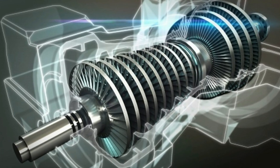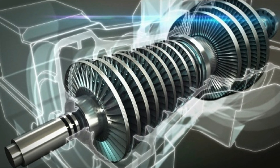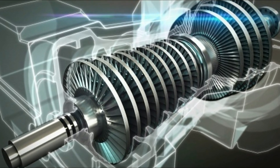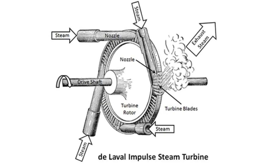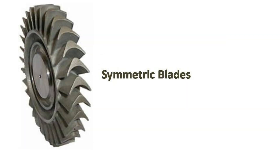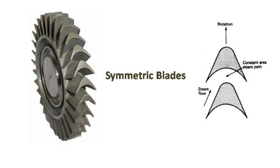The working principle of the steam turbine depends on the dynamic action of steam. In an impulse steam turbine, there are some fixed nozzles and moving blades present on a disc mounted on a shaft. The moving blades are in symmetrical order, called symmetric blades.